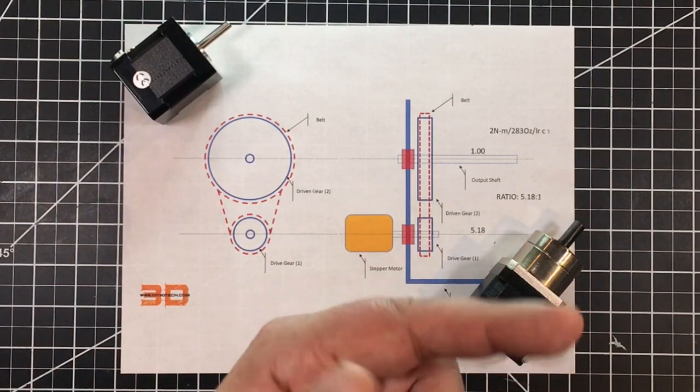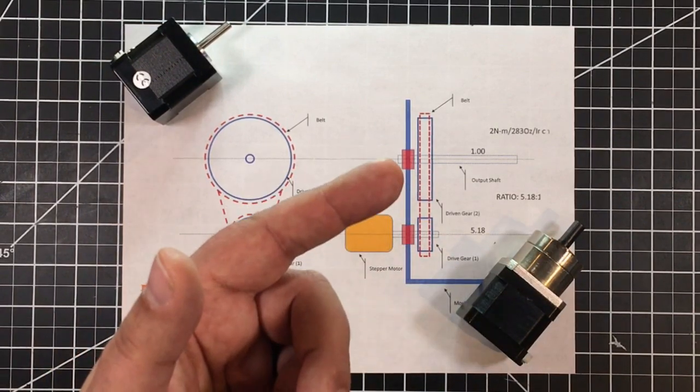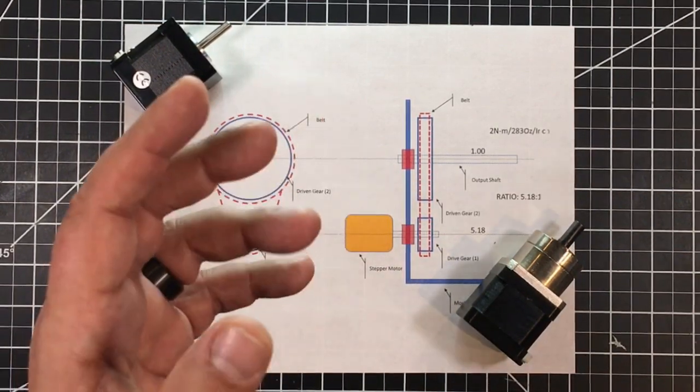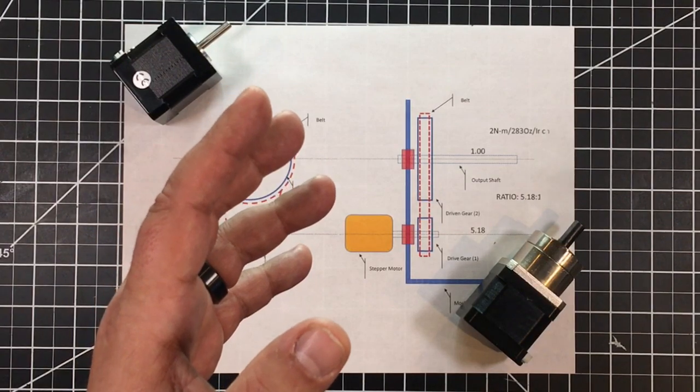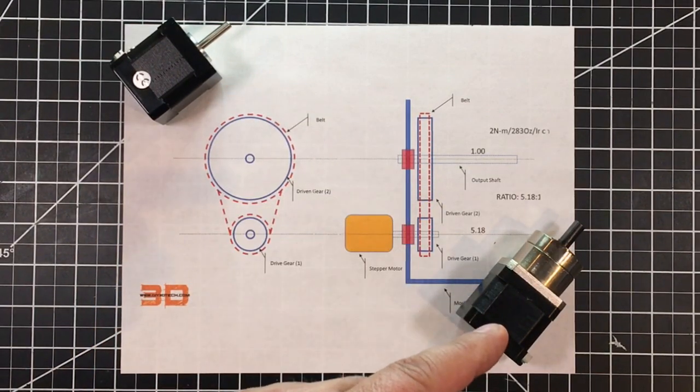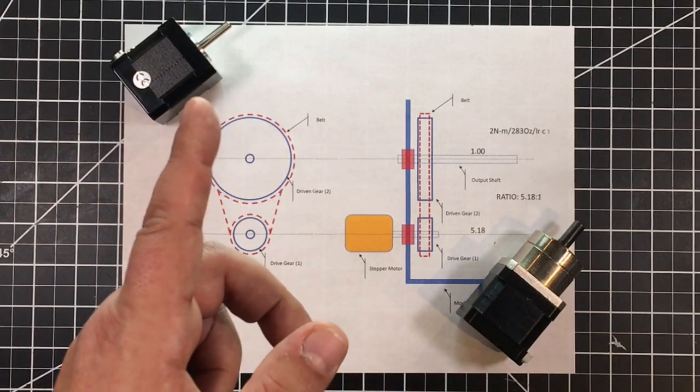You're getting all this out of this short, stubby assembly here. So it's very compact, very easy to work with. You don't have to build this. Now the cost of this is also what's really interesting too. This motor is about 28 bucks on Amazon, this one's about 15.